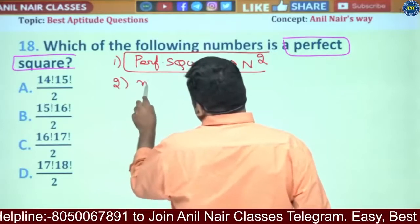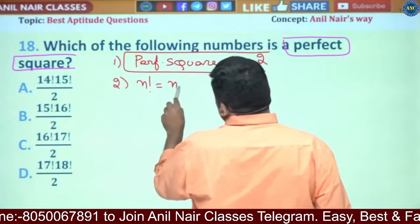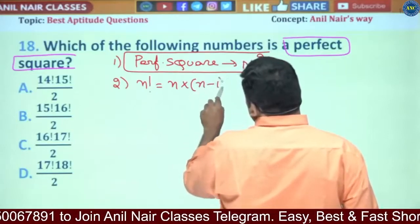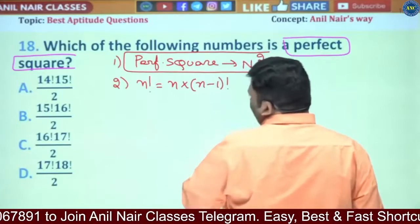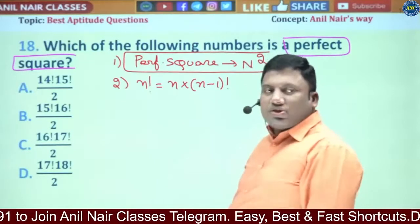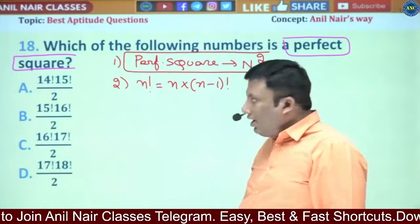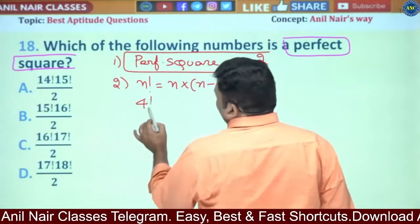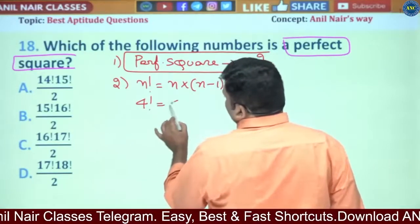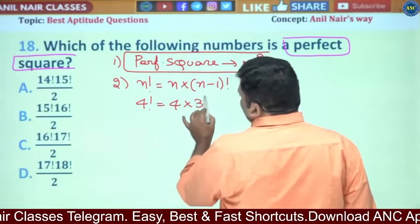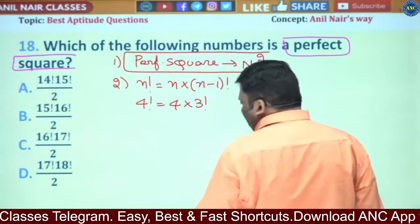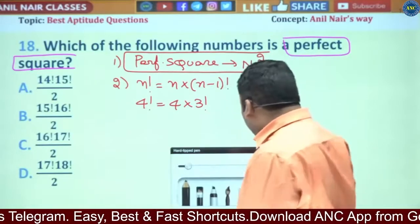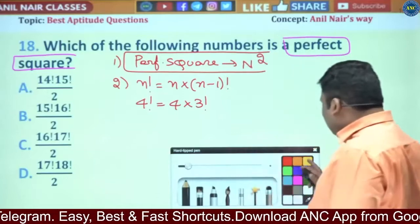Second point: n factorial is given by n into (n minus 1) factorial. For example, 4 factorial is 4 into 3 factorial. We will use these two important key points to solve the problem.